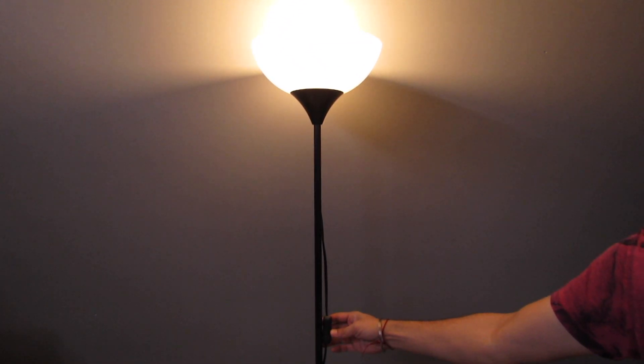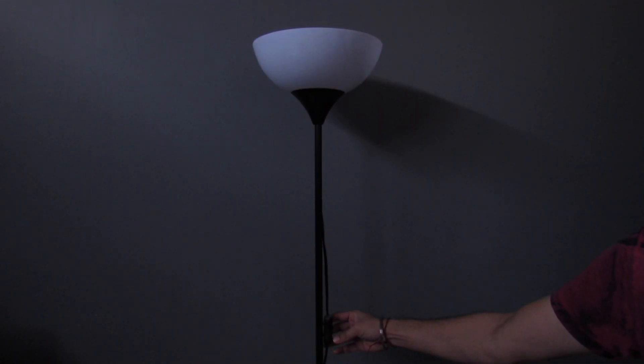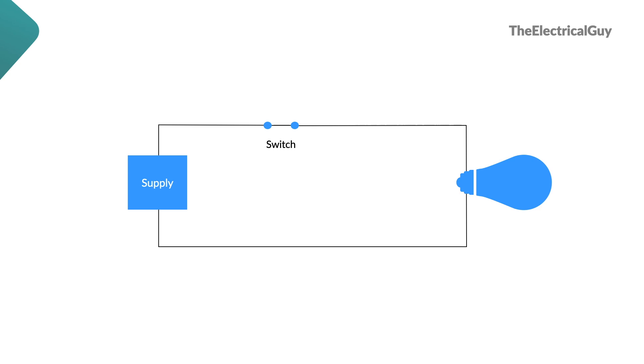And to do so, we need to press this switch. As you can see, the bulb is turned off. So basically, what switch is doing, it is breaking the path for electrons, it is creating an open circuit.